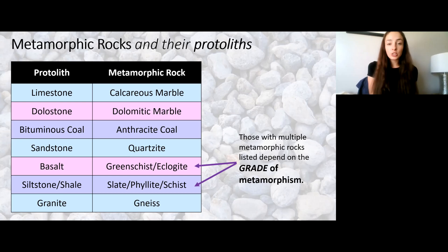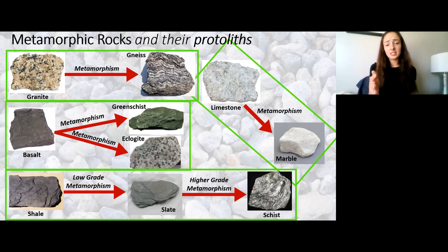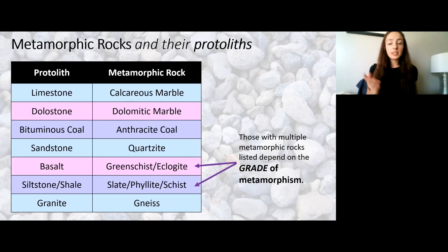Salt can form green schist or eclogite. Siltstone can become shale, slate, phyllite, or schist. Phyllite is kind of an in-between between slate and schist — imagine something slightly less shiny than schist but not as dull as slate. And granite forms gneiss. The ones with multiple metamorphic products depend on the grade of metamorphism.